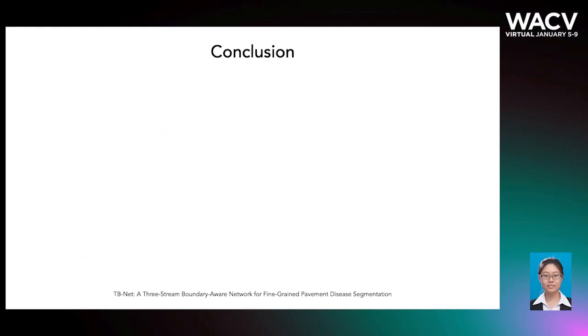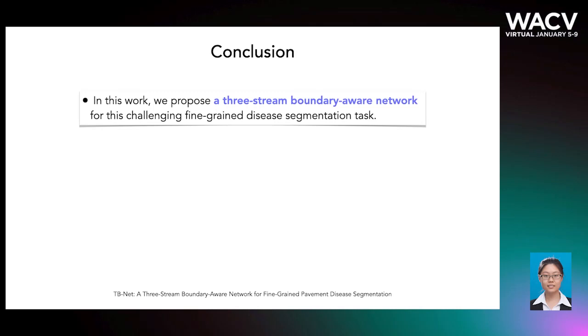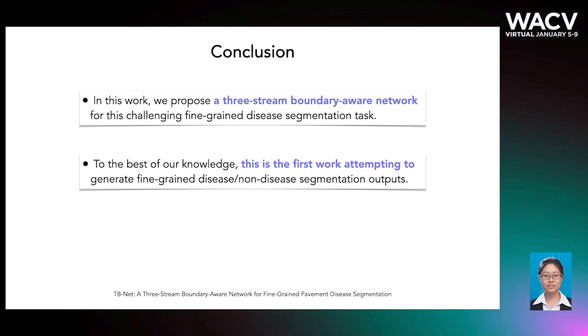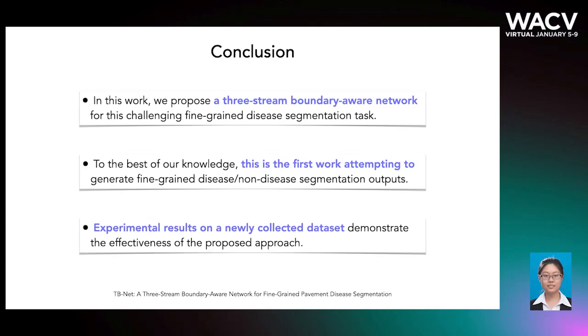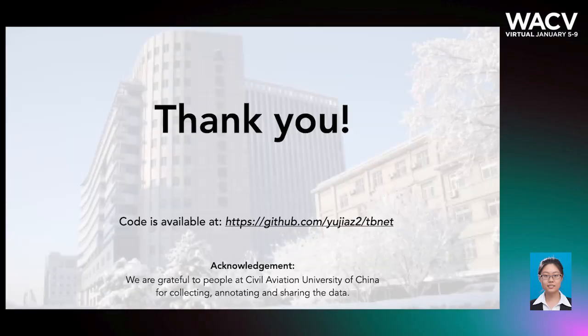To conclude our work, we propose TBNet that takes full advantages of different information. To the best of our knowledge, this is the first work attempting to generate fine-grained disease as well as non-disease segmentation outputs for detailed pavement inspection. Experimental results on a newly collected dataset demonstrate the effectiveness of the proposed approach. Our code is released online.